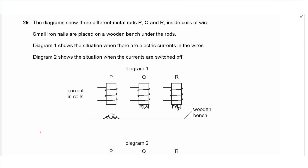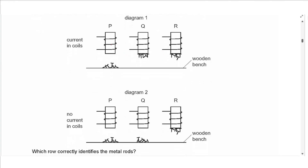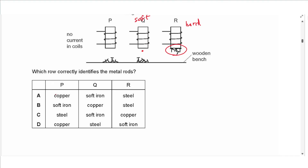Question 29: Three metal rods P, Q, R are inside coils of wire with small iron nails placed nearby. With current, Q and R attract nails but P does not — so P is non-magnetic (copper). After switching off: nails fall from Q (soft magnetic material — soft iron) but stay on R (hard magnetic material — steel). Answer is A.